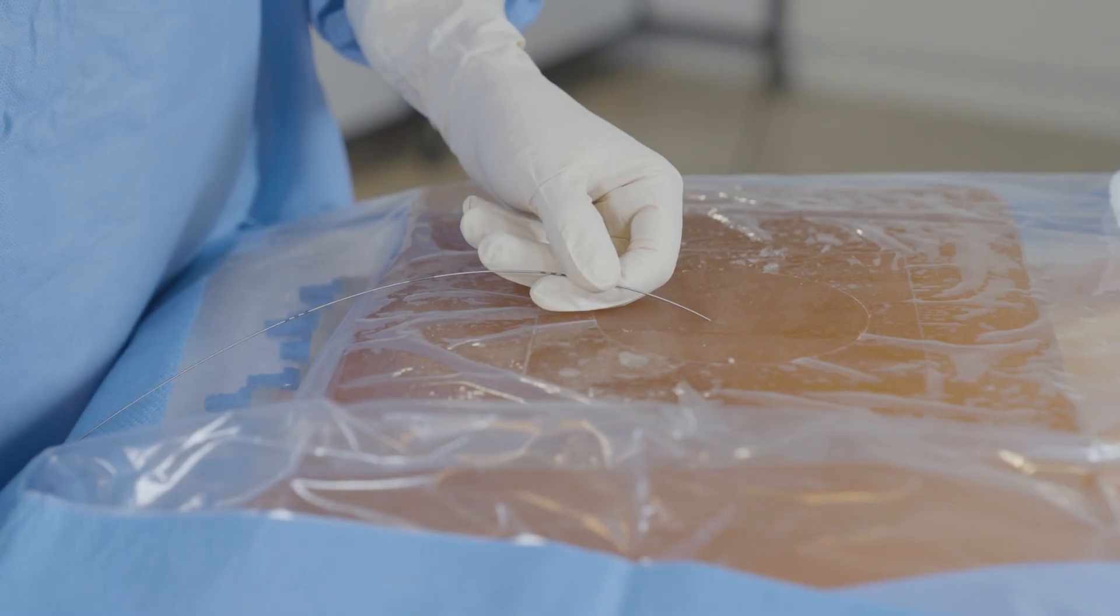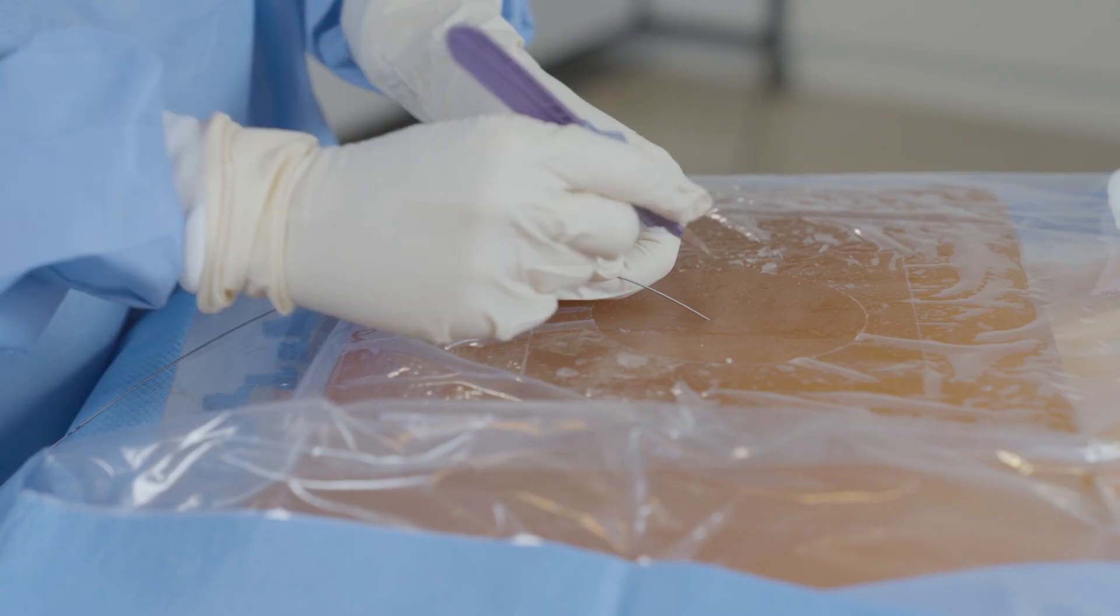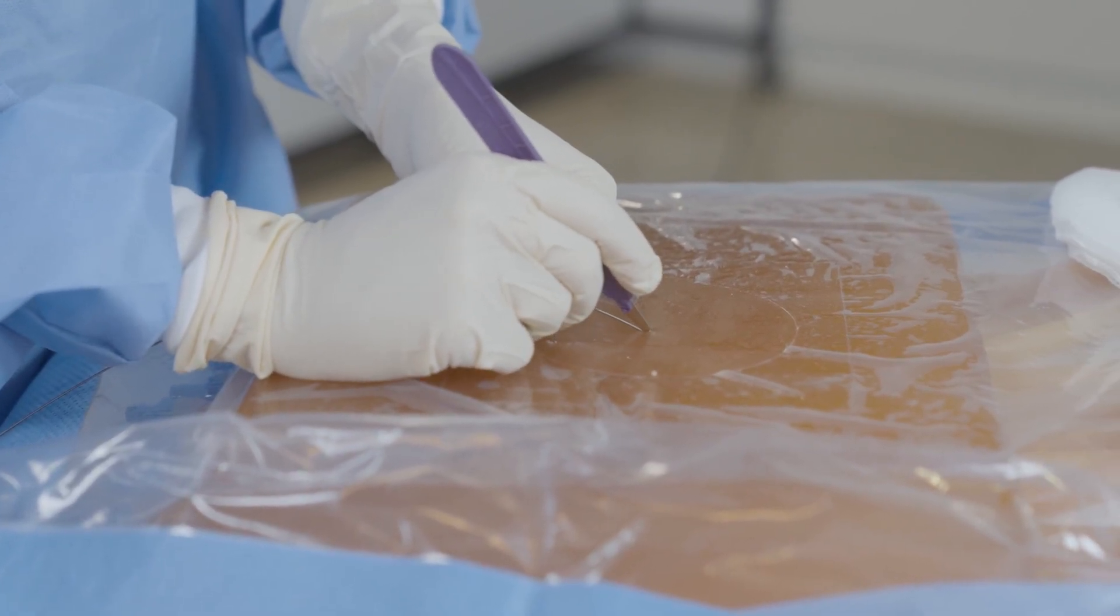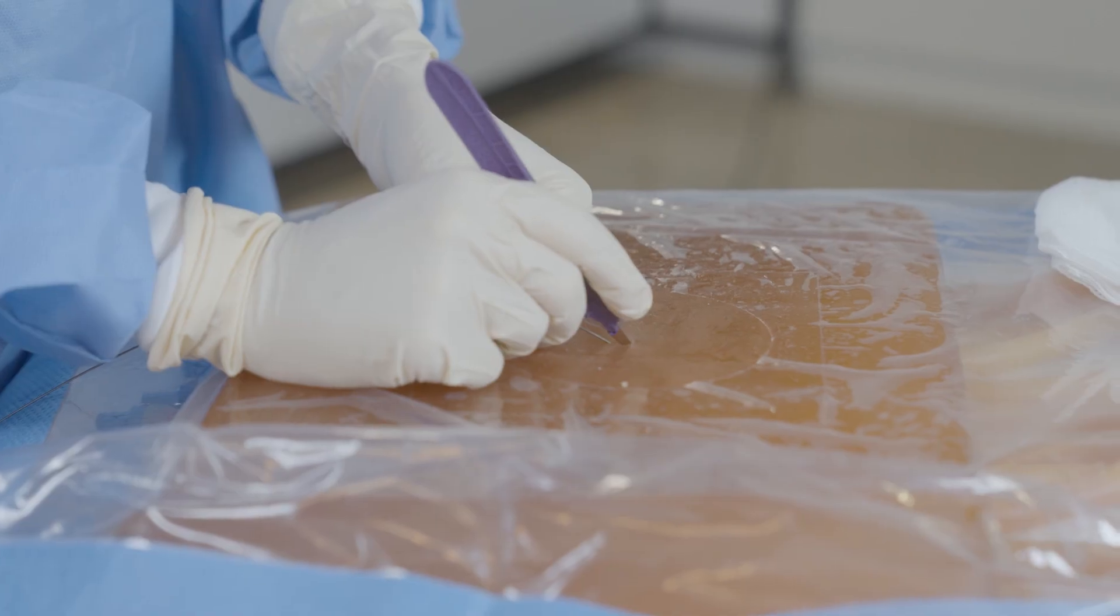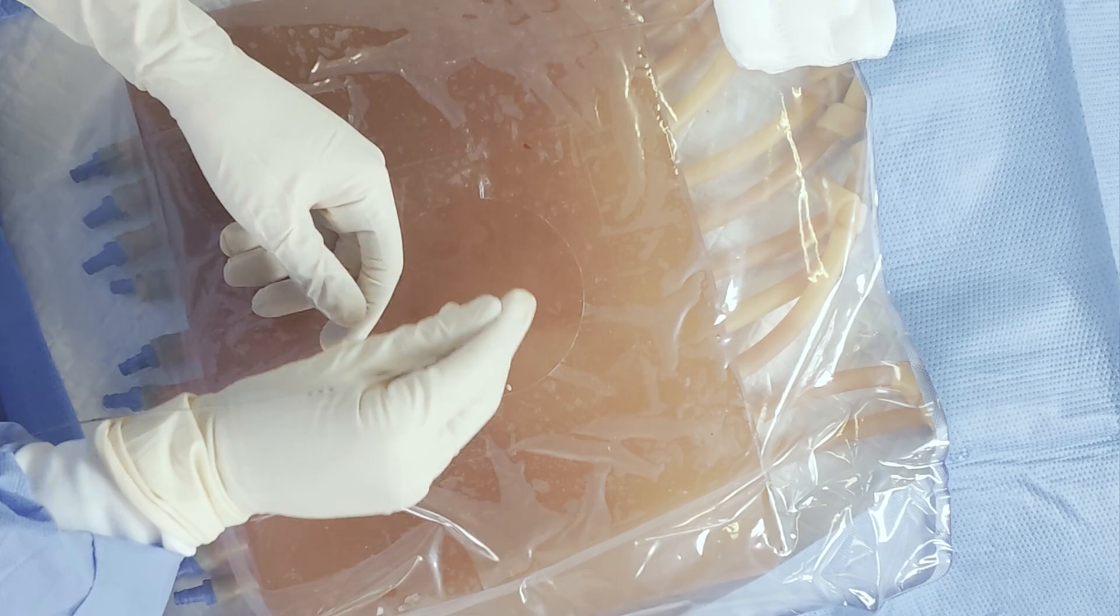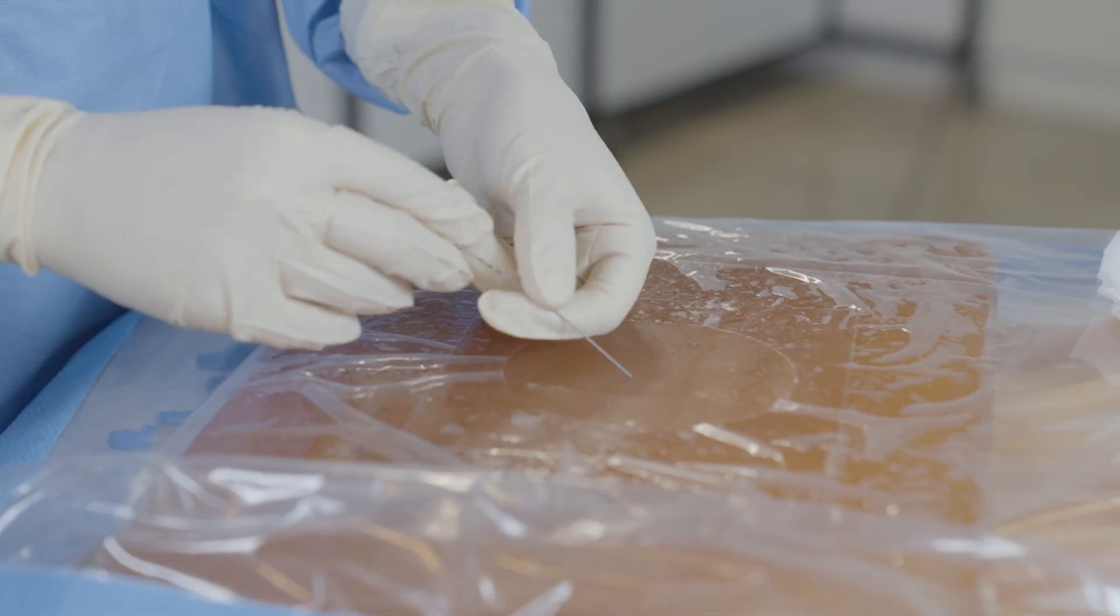After removing the needle, make a nick through the skin with your scalpel larger than what would be used for a central line. To prevent a skin bridge, ensure the scalpel's bevel is facing up, place the tip at the hole and make the incision in the direction of the guide wire. Once you make your nick, it is important to rotate your guide wire through the nick to ensure there's no skin bridge.